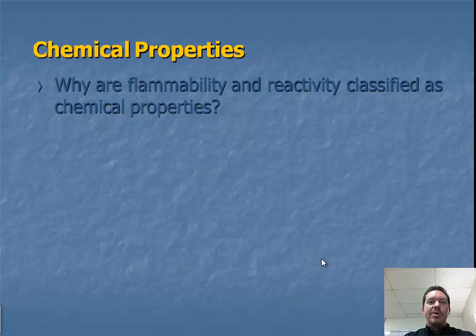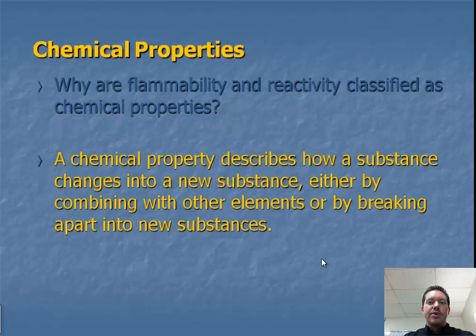Looking at chemical properties, why are flammability and reactivity classified as chemical properties? A chemical property describes how a substance changes into a new substance, either by combining with other elements, or by breaking apart into new substances.